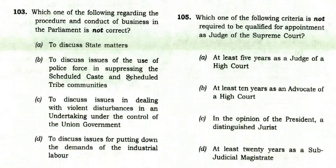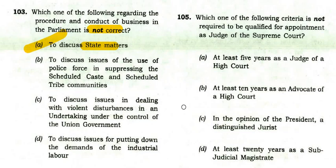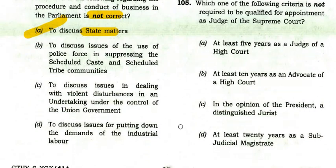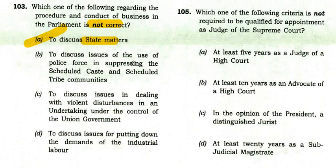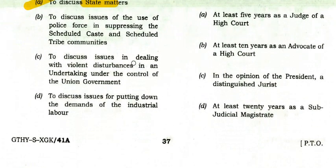Which statement regarding the procedure and conduct of business in Parliament is not correct? The answer is: to discuss state matters — Parliament does not discuss state matters, those are state subjects. Parliament discusses issues of suppression of SC/ST communities, violent disturbances under Union government control, and demands of industrial labour.